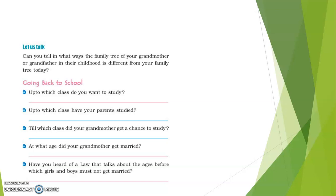Till which class did your grandmother get a chance to study? When you talk to your grandmothers, most of your grandmothers may be graduates. But in my grandmother's case, they rarely had a chance to study beyond 4th or 5th standard. At what age did your grandmother get married? Most of them would have got married by the age of 18 or 20, though some married a little later and some even earlier. Have you heard of the law about minimum marriage age? For girls, the legal minimum marriage age is 18 years, and for boys, it is 21 years.